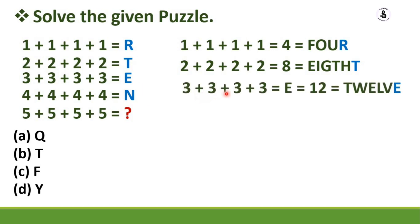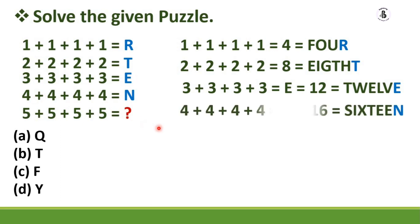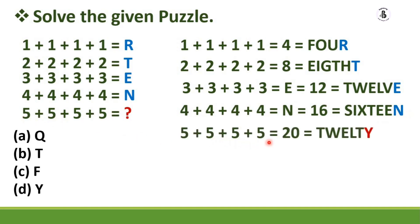Similar pattern: 3+3+3+3+3 equals 12, which spells T-W-E-L-V-E — the last letter is E. Then 4+4+4+4 equals 16, spelling S-I-X-T-E-E-N — the last letter is N. Finally, 5+5+5+5 equals 20, which spells T-W-E-N-T-Y — the last letter is Y. So option D is the right answer.